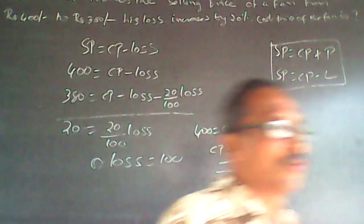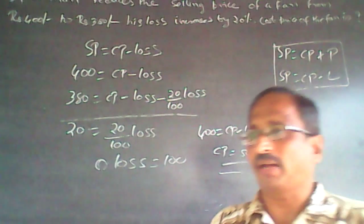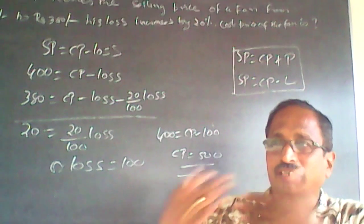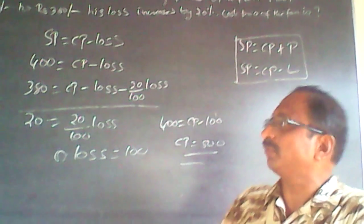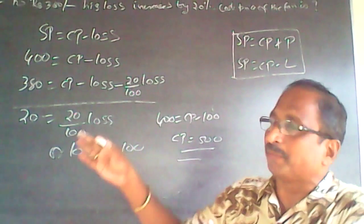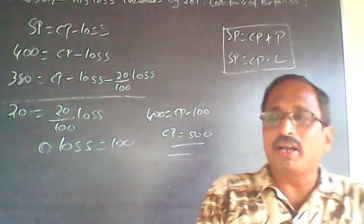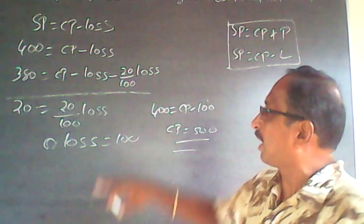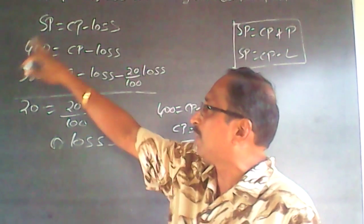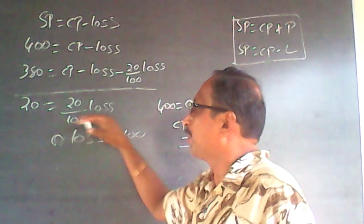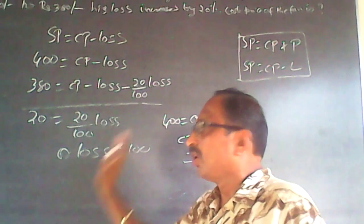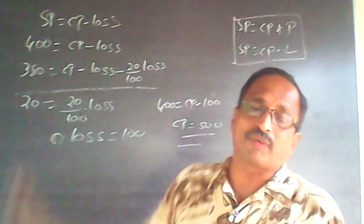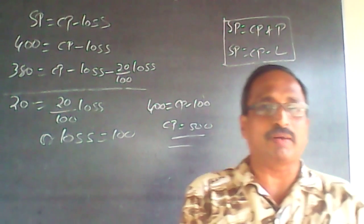Actually this is an oral problem. If the loss is increasing by 20, that 20 equals 100% of some base, so loss equals 100, and 400 plus 100 gives CP equal to 500. As simple as that.